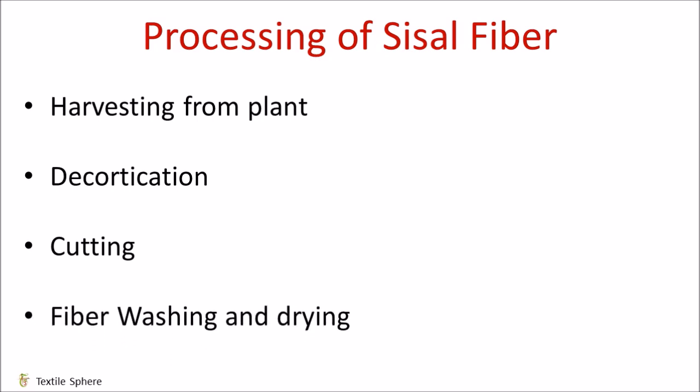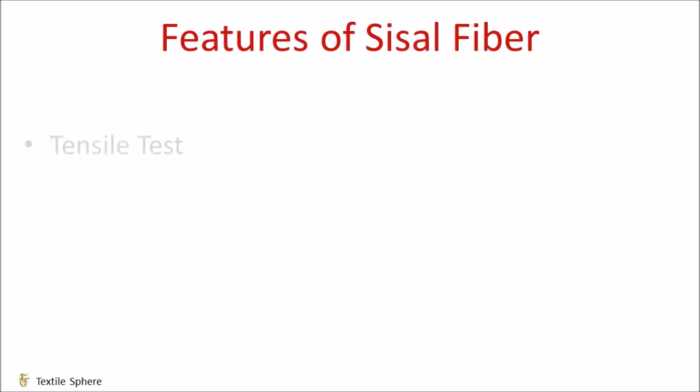The last step is fiber washing and drying. The fibers are then washed and hung out in the sun. They can be dyed directly. Now let's talk about features of sisal fiber. The first one is tensile test. In natural fibers, the flaws or weak links are irregularly spaced in the fiber. The strength will depend on the length of the fiber used for tensile strength.